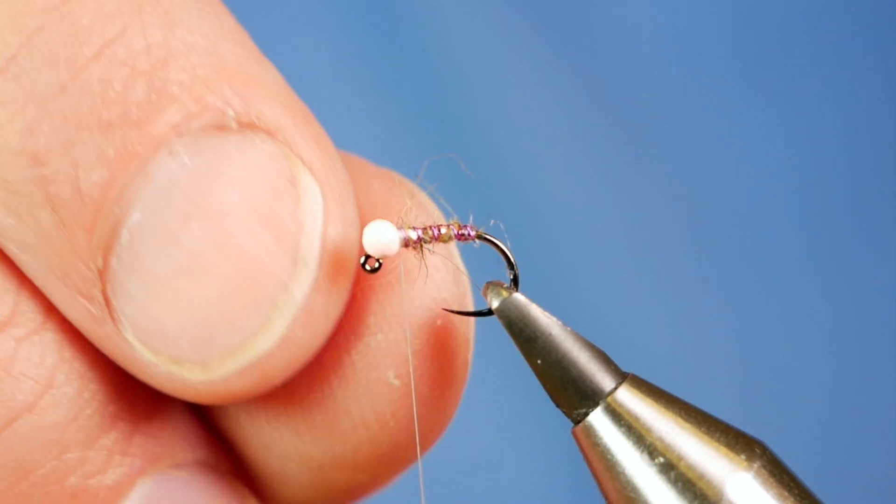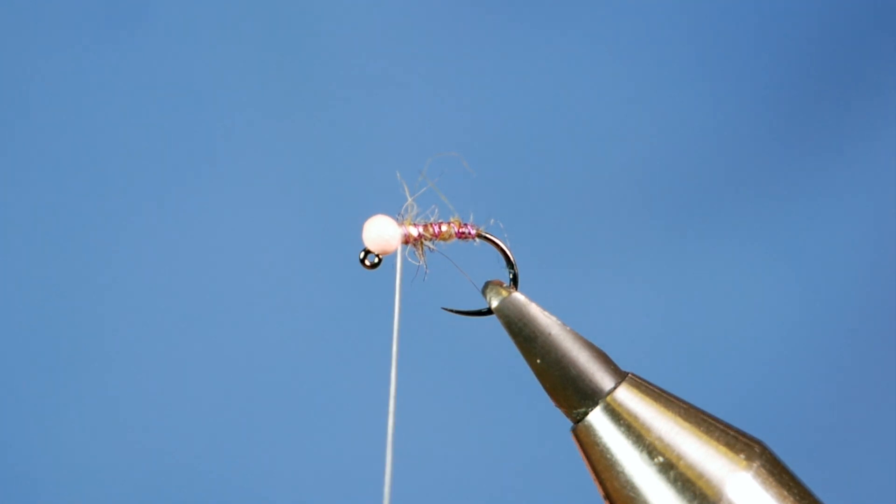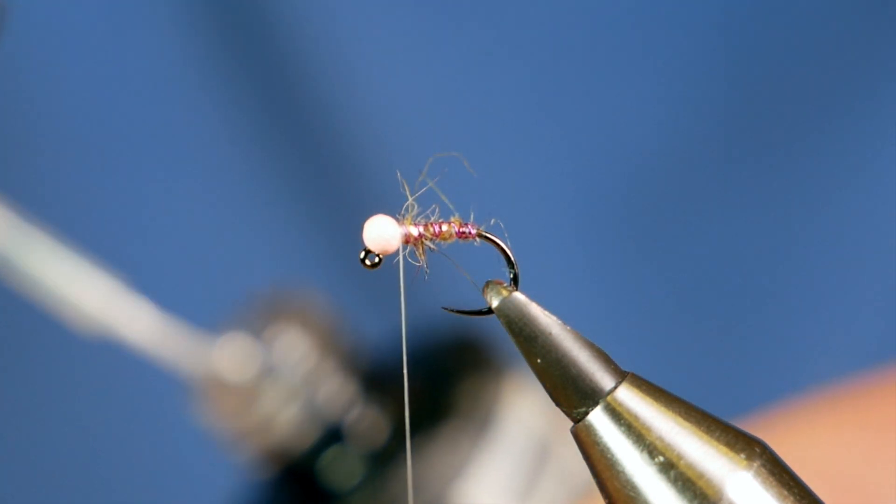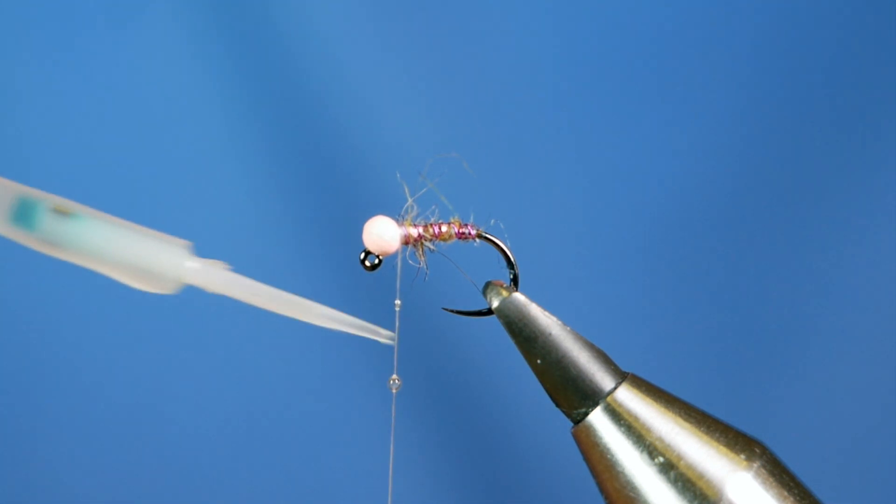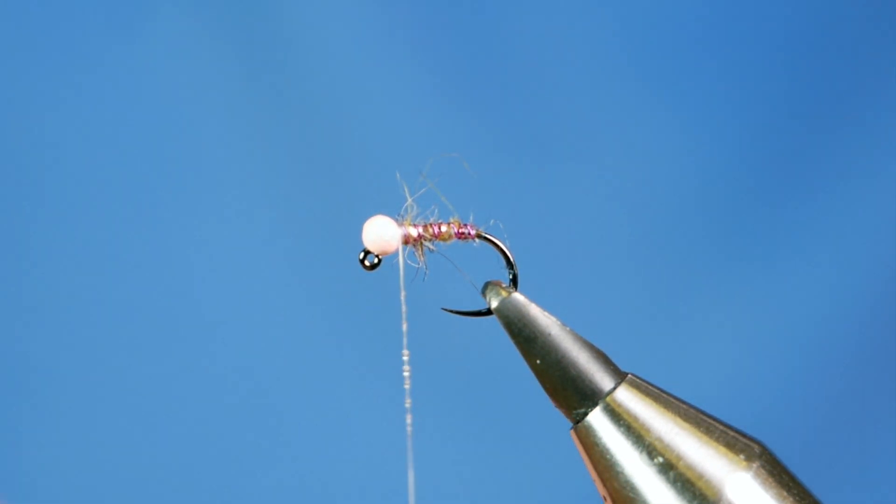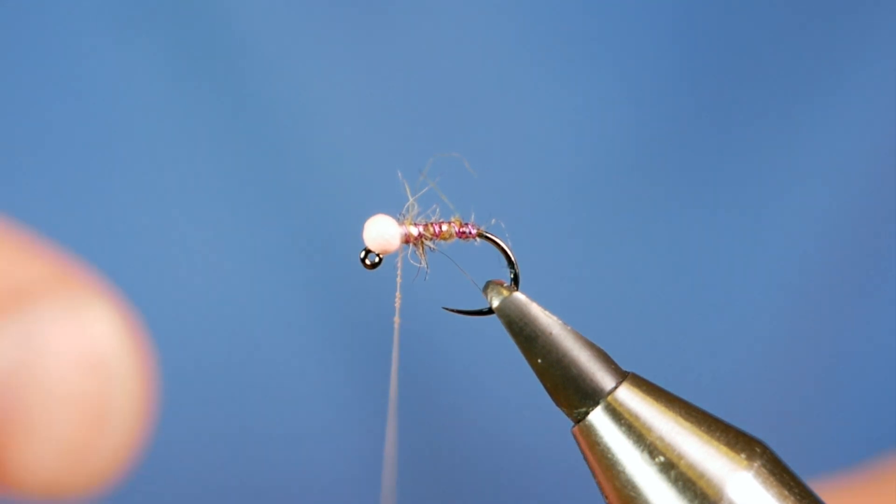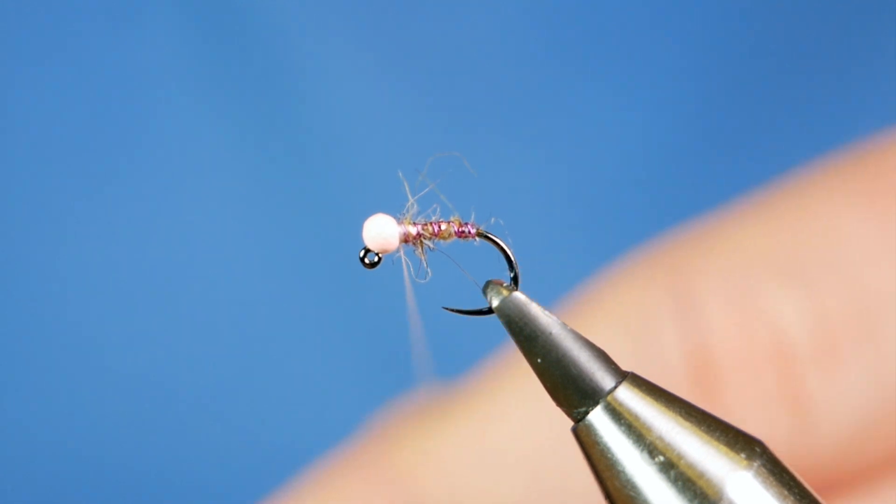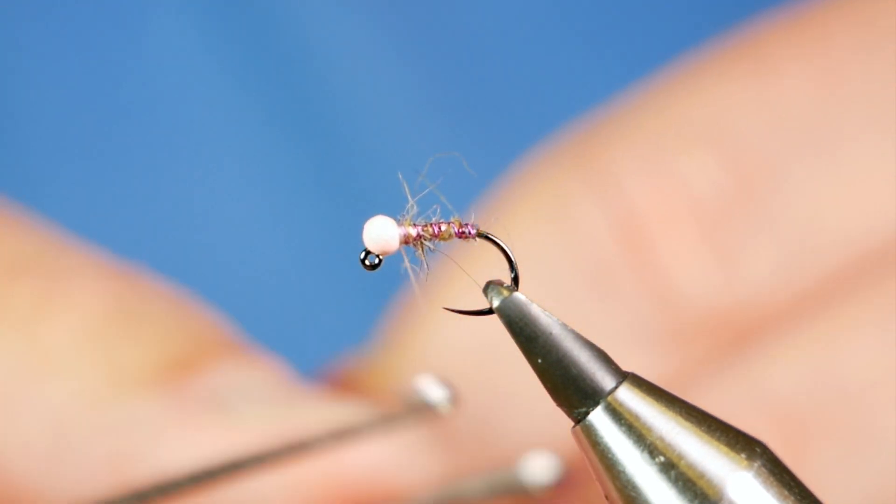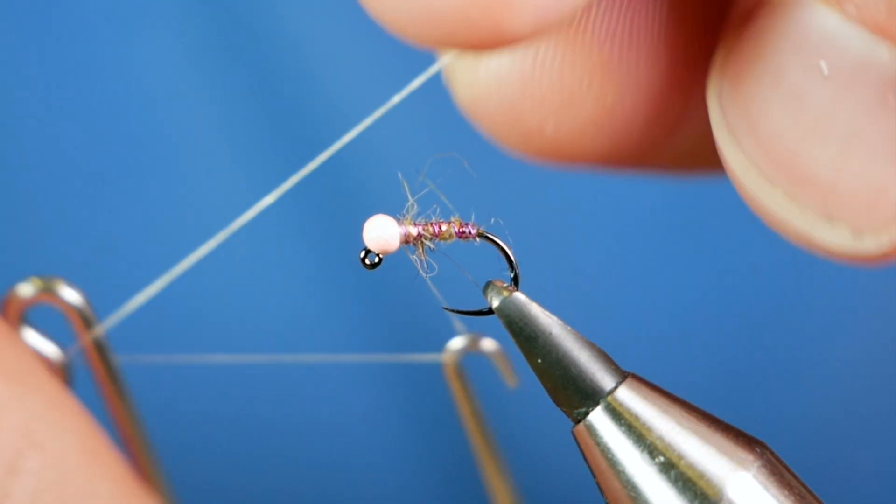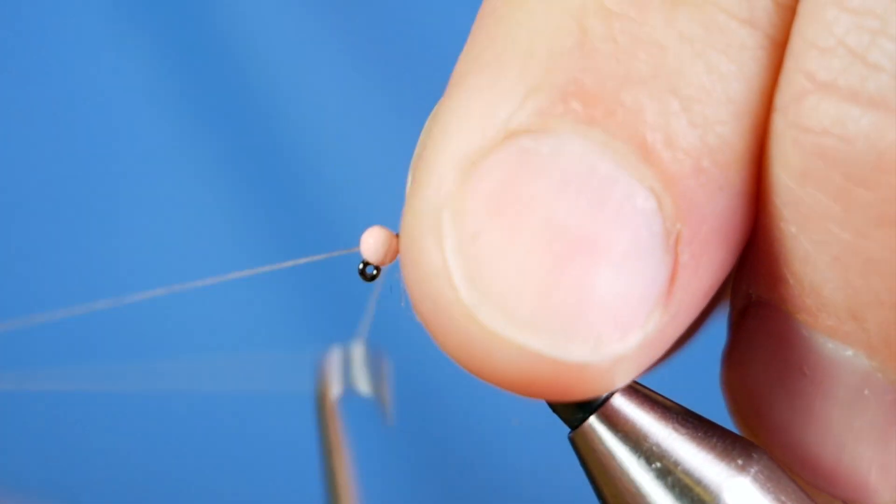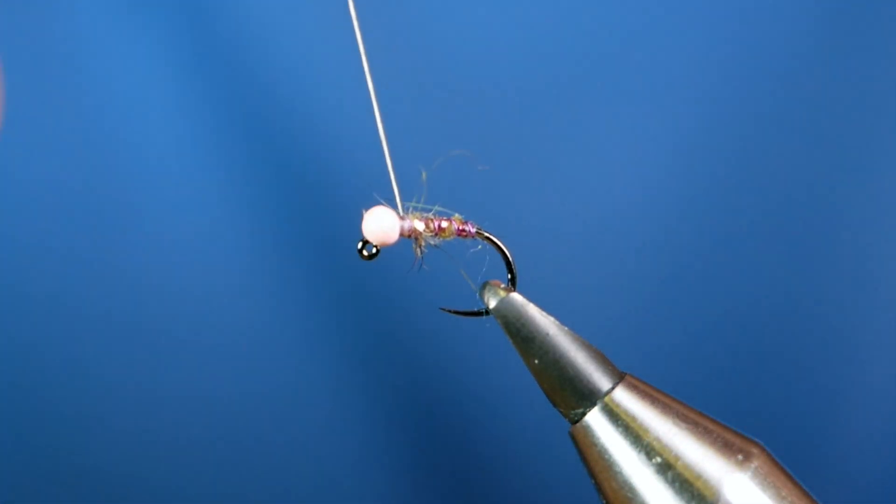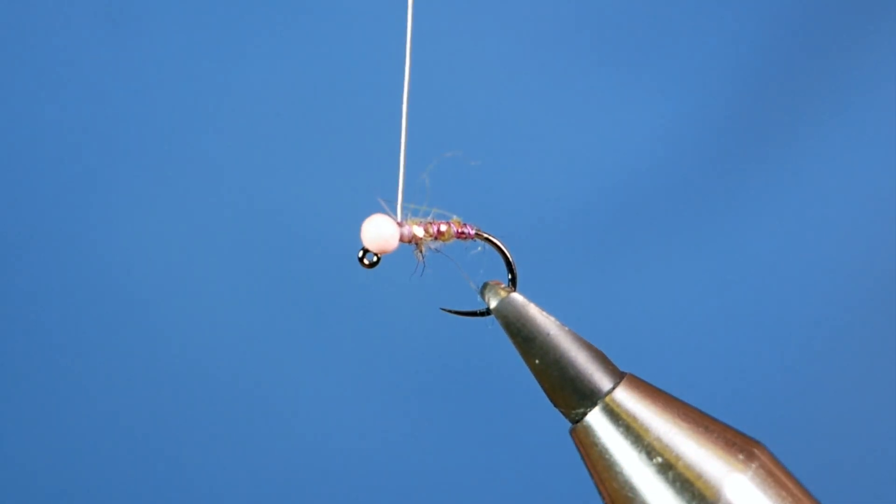Okay, to finish off then, I'm going to add a little bit of UV resin to my thread. Grab my quick finish tool. Make a mess of it, as usual. And finish your fly off.